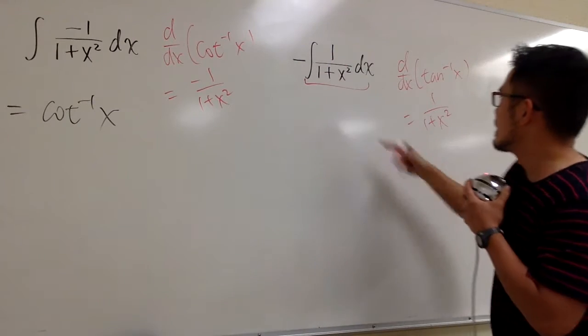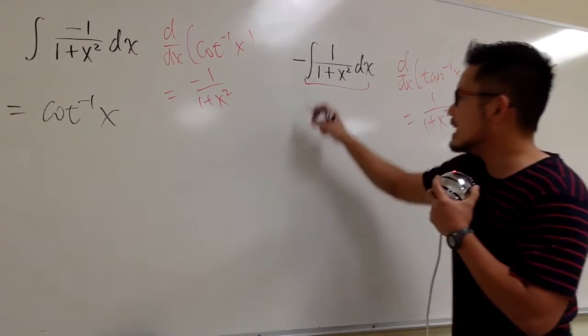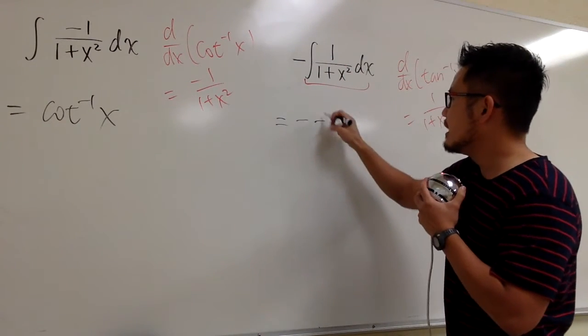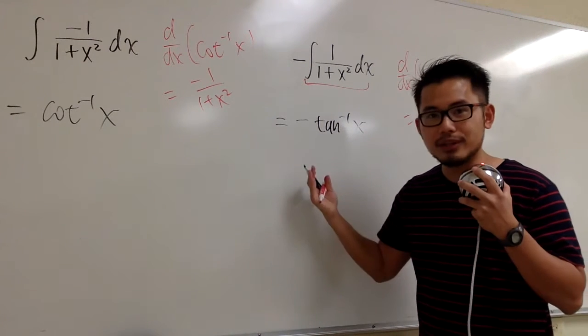So that means this part must be that, but then I have this negative in the front, so I have negative inverse tangent x. I'm done right here as well.